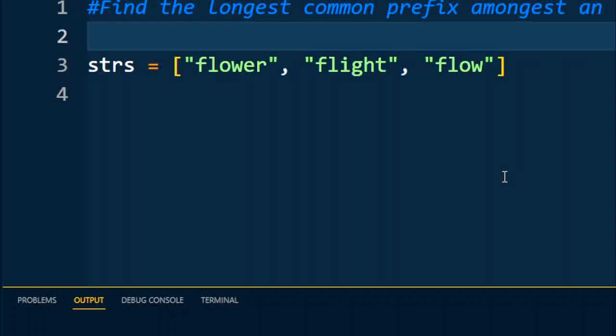Consider a list consisting of three strings. We'll have to find a common prefix between the strings. In the given example, 'fl' is the longest common prefix among these elements. There are multiple ways to find the solution to this problem.